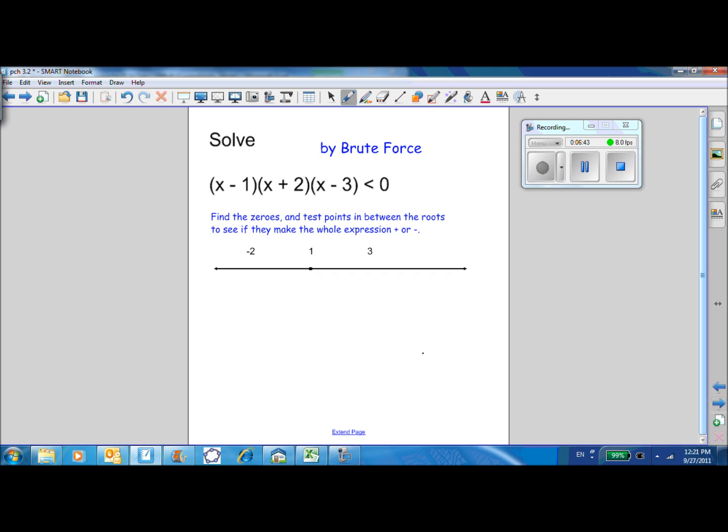Finally, here's the brute force technique. And some people prefer this because it doesn't require any charts or graph, but it requires a lot of arithmetic. First, find the zeros and test points in between the roots to see if they make the whole expression positive or negative. So the zeros are at negative 2, 1, and 3. I'm going to put open circles around those because we're not trying to make it less than or equal to zero. So we don't want to include the zeros. And now we test a point in each one of these sections here. Okay, so let's test zero. Test x equals zero.